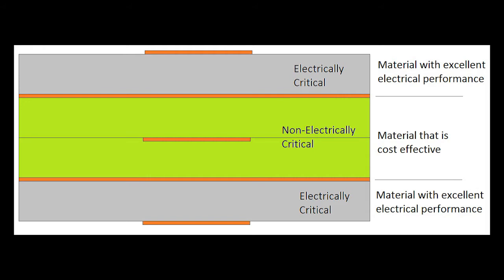There are several reasons for mixing materials in a multilayer hybrid. One common reason is that some layers need to be electrically critical for RF performance, while other layers—control circuits and power planes—are not as critical. High-frequency circuit materials are used for the critical RF layers, and lower-cost FR4 for the others. Another reason involves CTE—coefficient of thermal expansion. Materials with good RF performance may not have good CTE, so mixing in materials with very low CTE improves the overall circuit CTE, which makes for good reliability of plated through-holes.